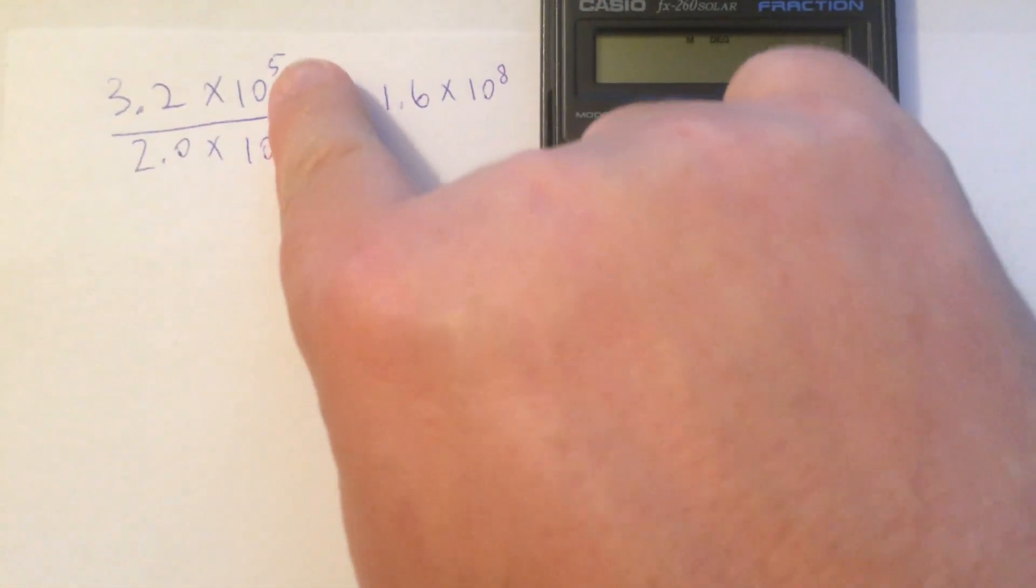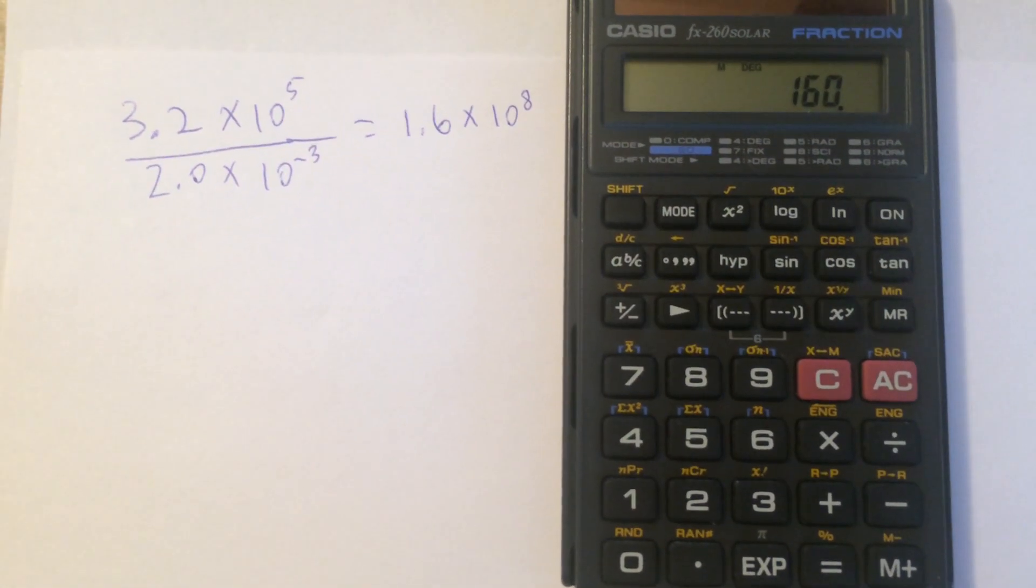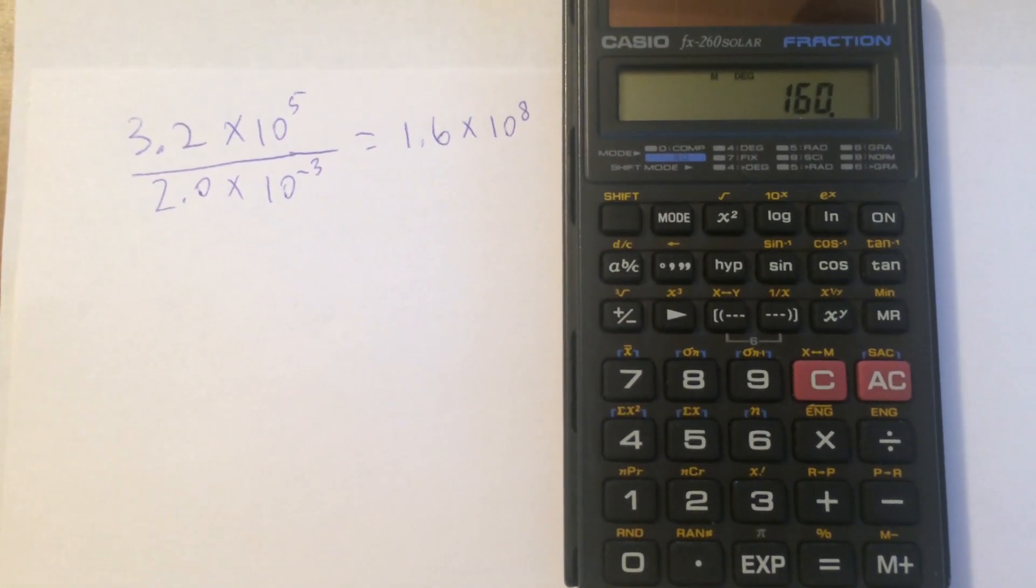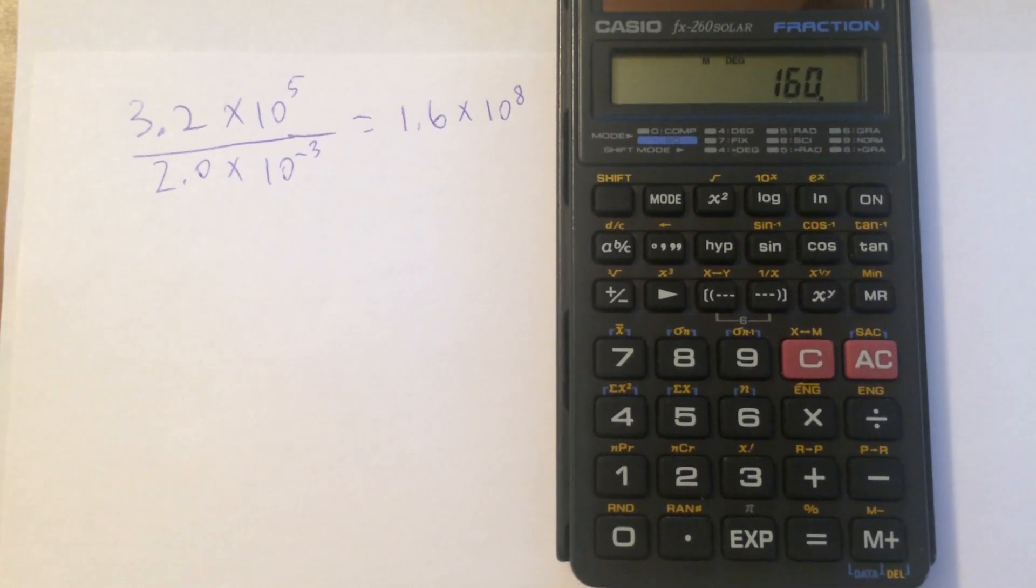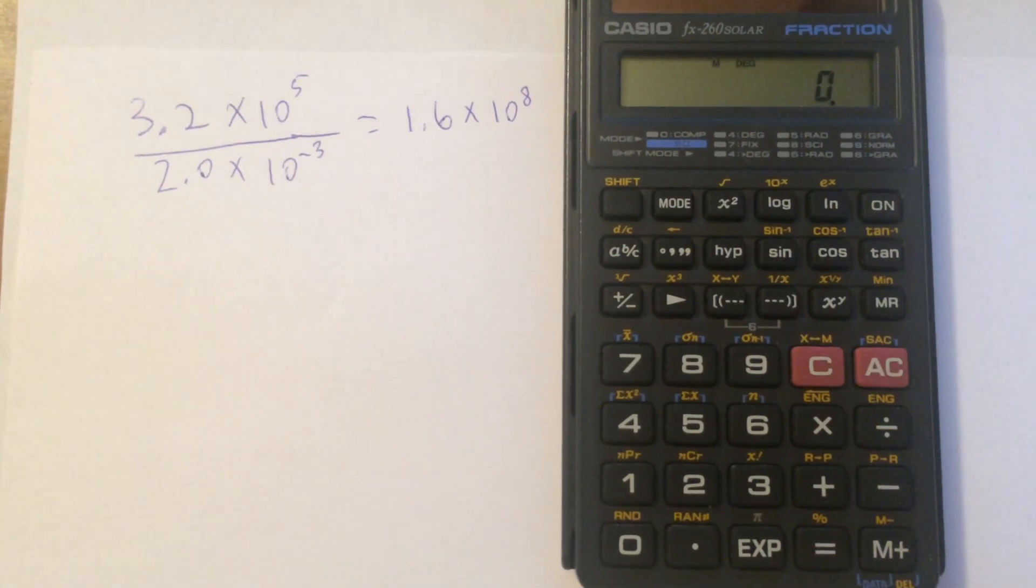So 10 to the minus 3 wound up being multiplied as part of the numerator there, rather than being in the denominator where it belongs. So this clearly is wrong, and we have to make a change here. So here's how you actually do it.